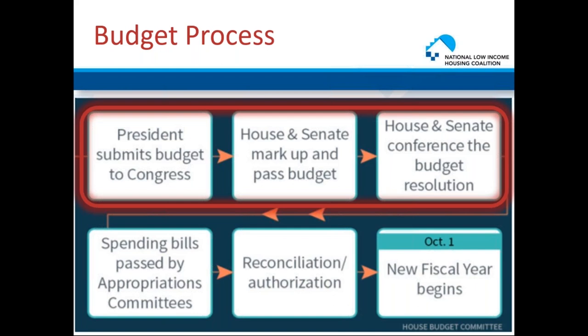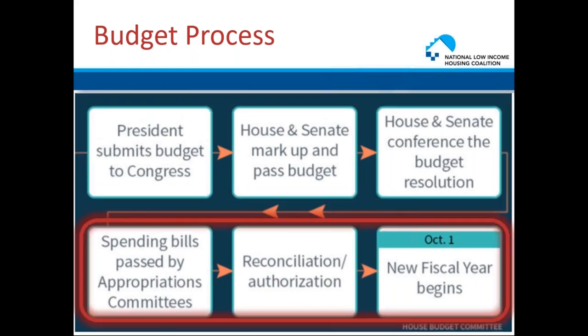The House and Senate Budget Committees could decide to pick a different number for the budget resolution than what the President has recommended in his own budget. Following the adoption of the budget resolution, the House and Senate Appropriations Committees take the discretionary spending set forth in the budget resolution and divide it among each of their 12 subcommittees. Some examples include the Subcommittee on Transportation, Housing and Urban Development, and the Subcommittee on Agriculture, Rural Development, and Food and Drug Administration. Each subcommittee conducts hearings on the programs under its jurisdiction and votes out a bill with funding levels for each program. The full Appropriations Committee in the House and Senate marks up the bill and sends it to the floor. Both chambers pass their bills and iron out the differences in a conference, then the final bill goes to the President to sign or veto.